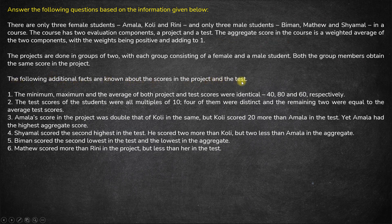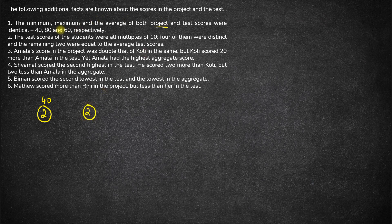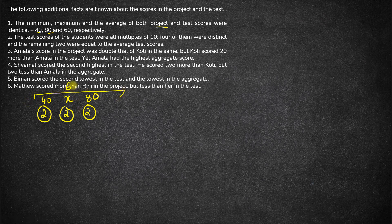The following additional facts are known about the scores. First, the minimum, maximum and average of both project and test scores are identical: 40, 80 and 60. For project, the minimum is 40 — so two members get 40 each — and two members get 80 each as the maximum. There will be another team of two members whose marks are x, such that the average marks of the whole group is 60. The average 60 is the sum of marks of all students divided by the total number of students. Let's calculate x.